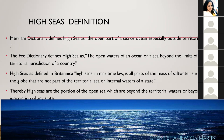Britannica defines high seas in maritime law as all parts of the mass of salt water surrounding the globe that are not part of the territorial sea or internal waters of a state. Thereby, high seas are the portion of open seas which are beyond the territorial waters or beyond the jurisdiction of any state.